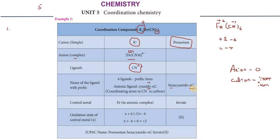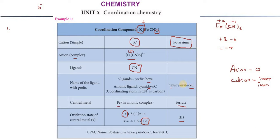This is cationic - it ends in -ium. The Fe is in an anionic complex, so the metal name becomes ferrate. The total charge on the complex is minus 4, and the oxidation state of Fe is plus 2, represented as Roman numeral 2. So the IUPAC name is potassium hexacyanidoferrate(II).